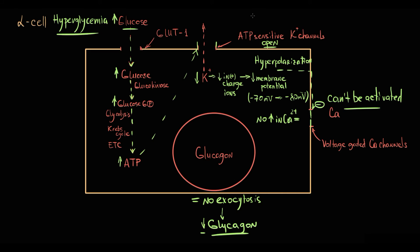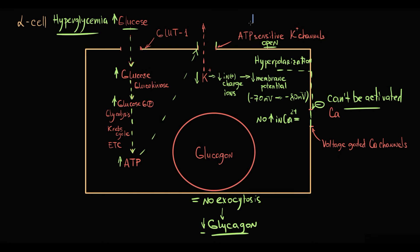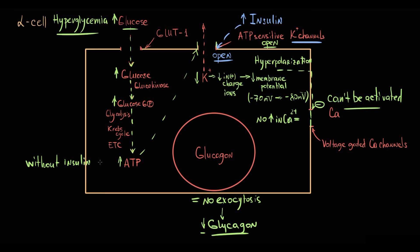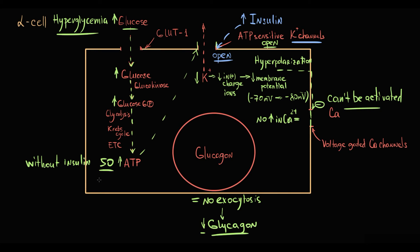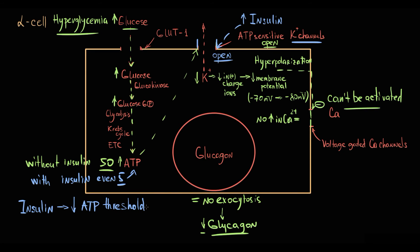In the case of high blood glucose level, blood insulin level is high. Alpha cells have insulin receptors, and insulin acts on alpha cells and basically helps to open potassium channels. Without insulin, to keep potassium channels open, the cell has to produce 50 ATP molecules. In the presence of insulin, even 5 ATP molecules will be enough to keep them open. Insulin helps to lower the ATP level threshold for potassium channel activation.